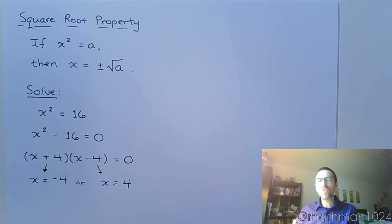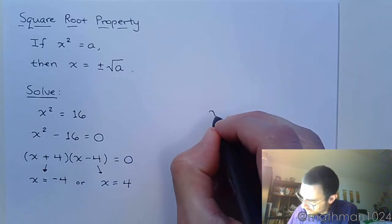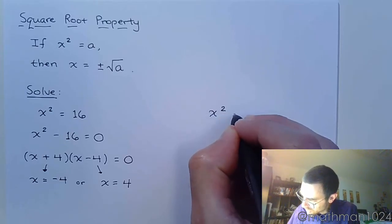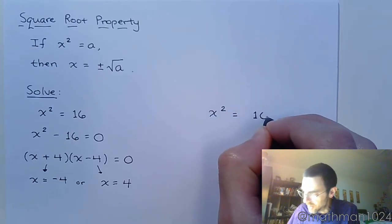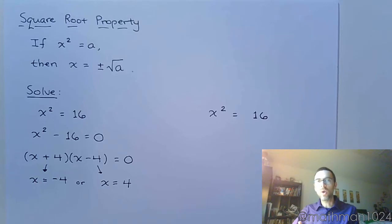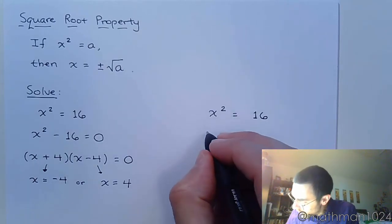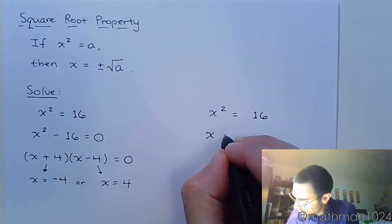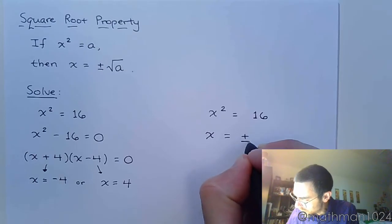Well, let's see what the square root property says. The square root property says that if you take x squared is equal to 16, you've got a square that's equal to a number. You can then say that x is equal to plus or minus the square root of that number.